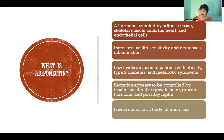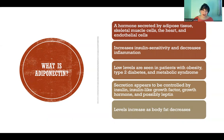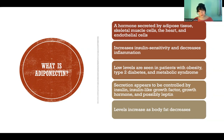Low levels of this hormone are seen in patients with obesity, type 2 diabetes, and metabolic syndrome. As body fat decreases, levels of adiponectin increase, which is a good thing. We want higher levels of adiponectin because that increases our cell sensitivity to insulin and also decreases our systemic inflammation.